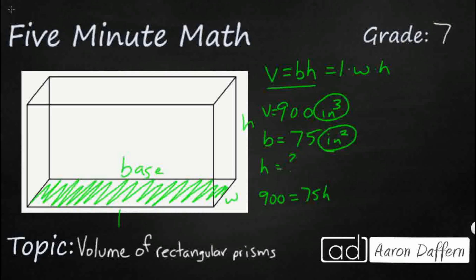So once we get it to look like that, it should be fairly straightforward. We know that we need to isolate the variable. So this H is being connected to the 75 with a multiplication, so the inverse operation is division. Divide by 75. Let's just divide both sides by 75.